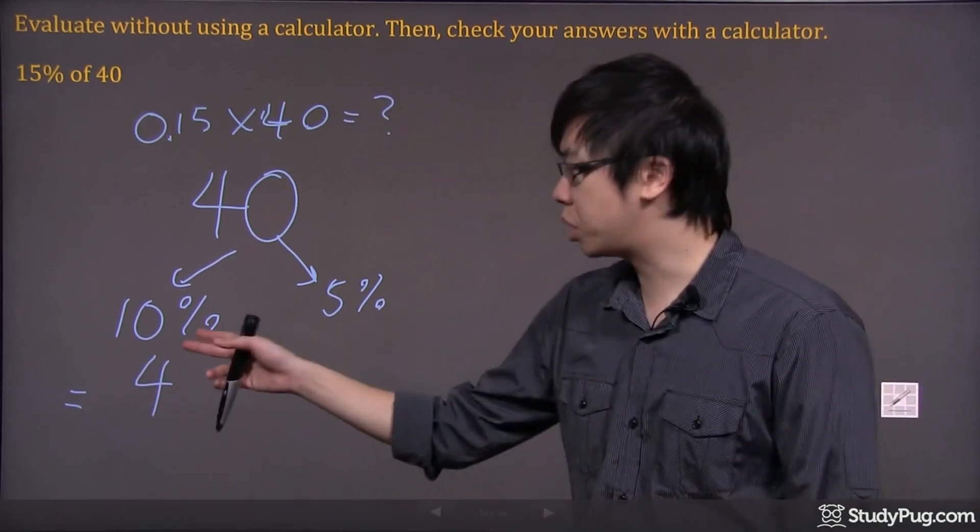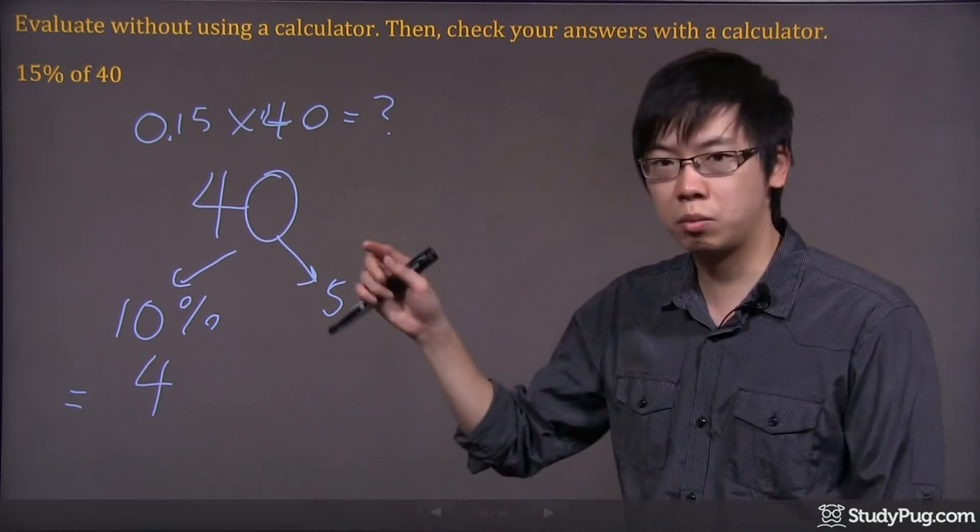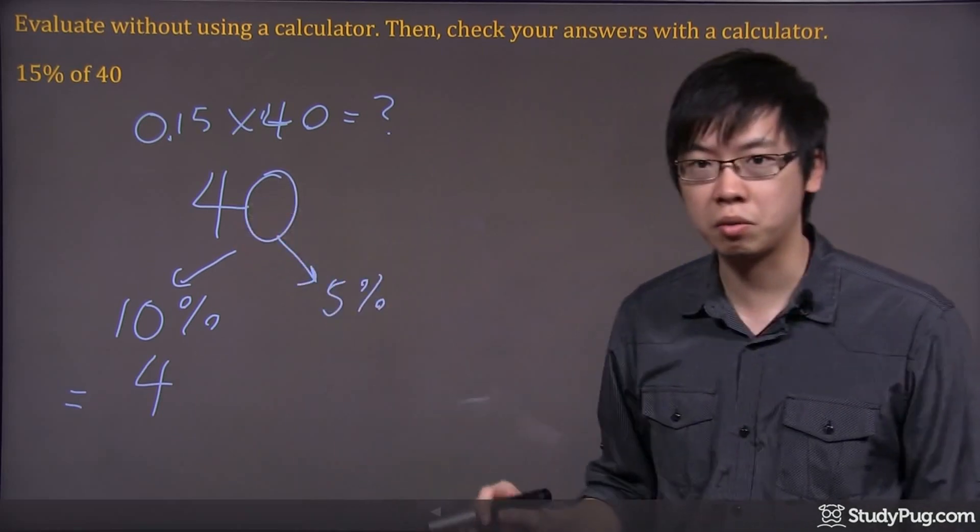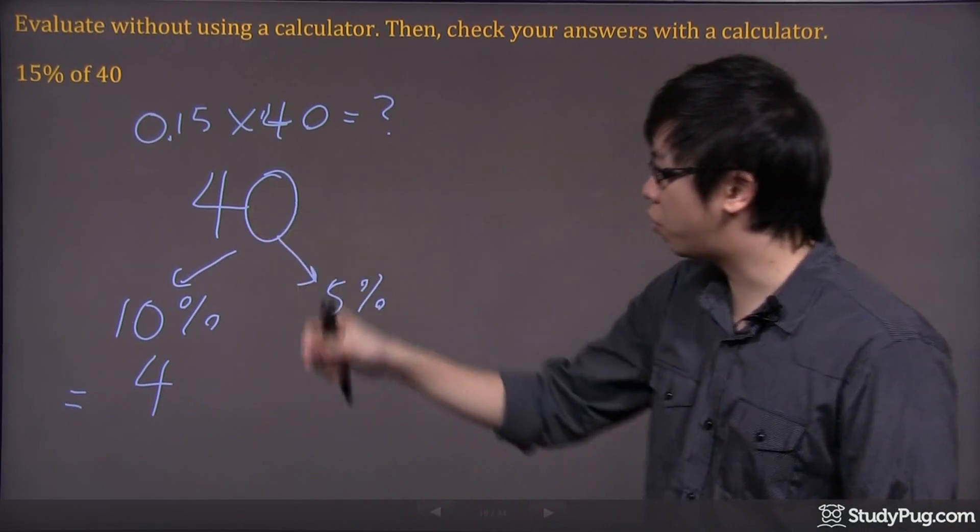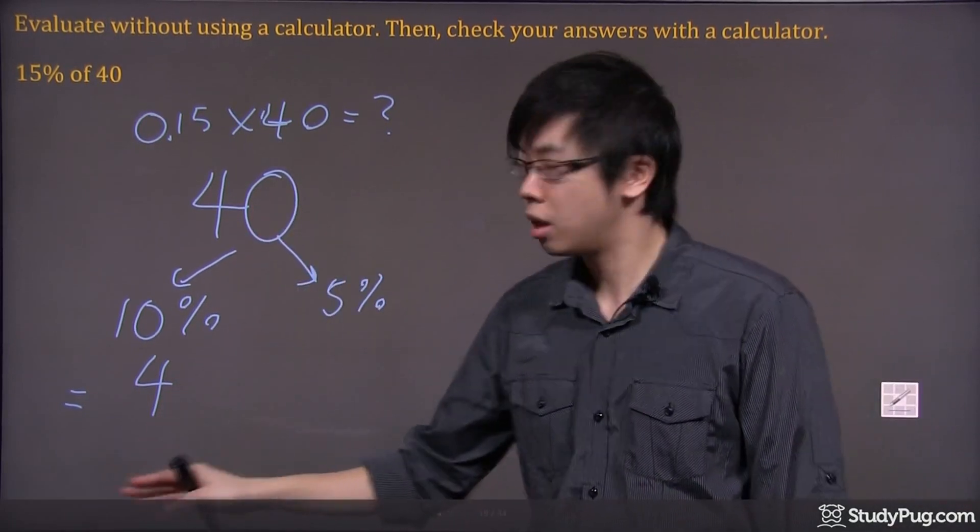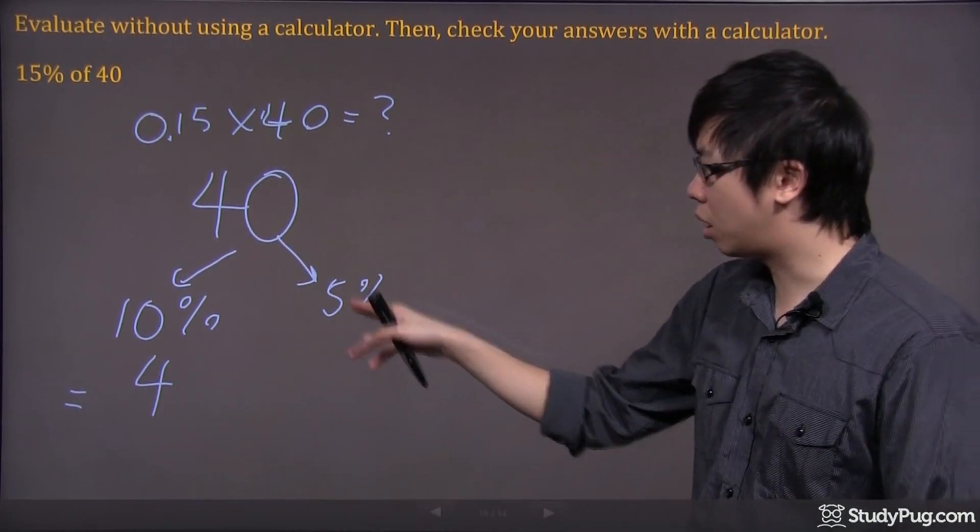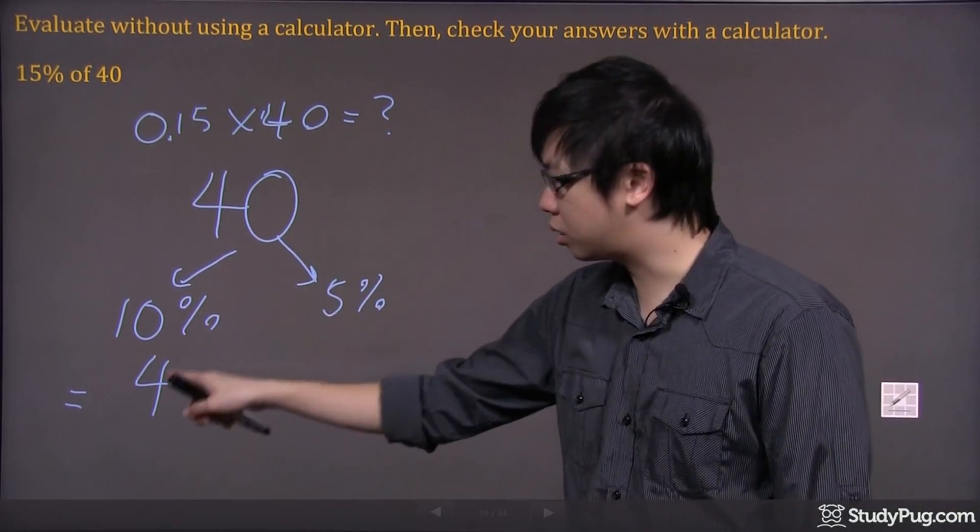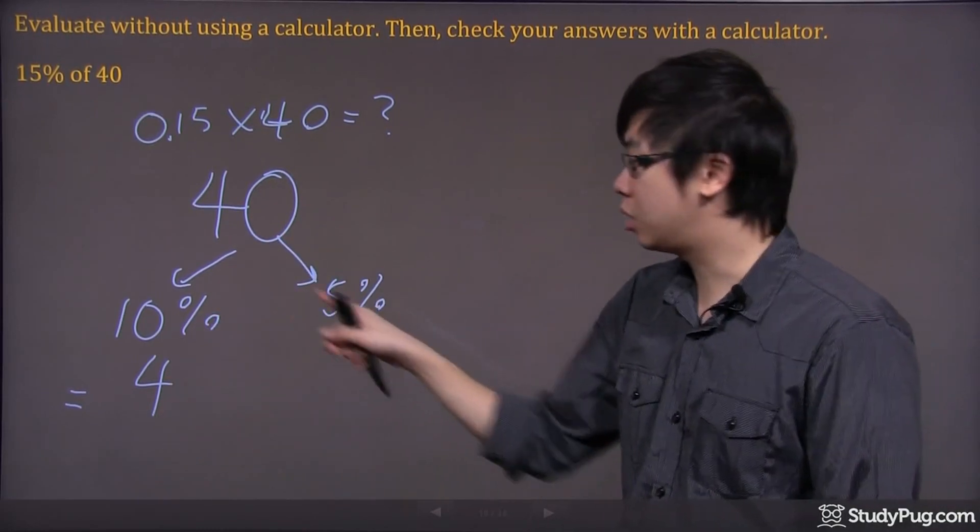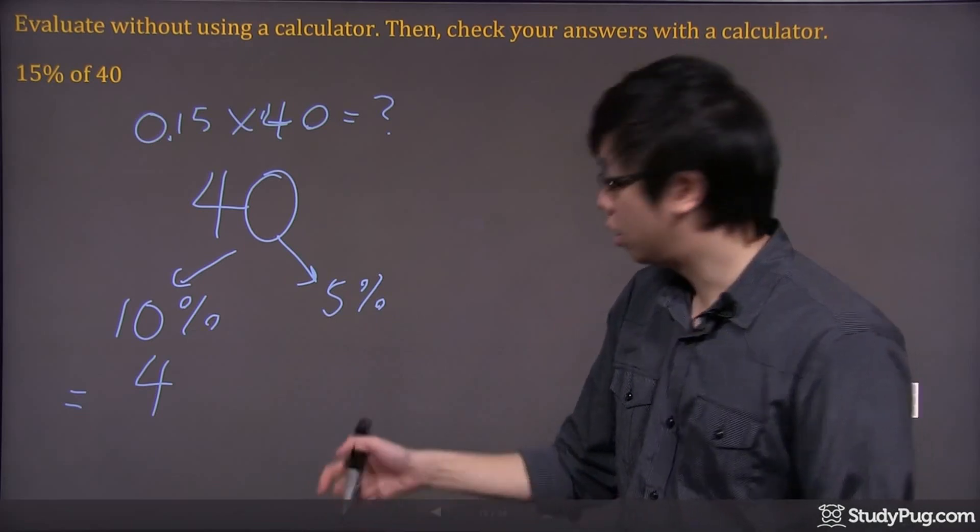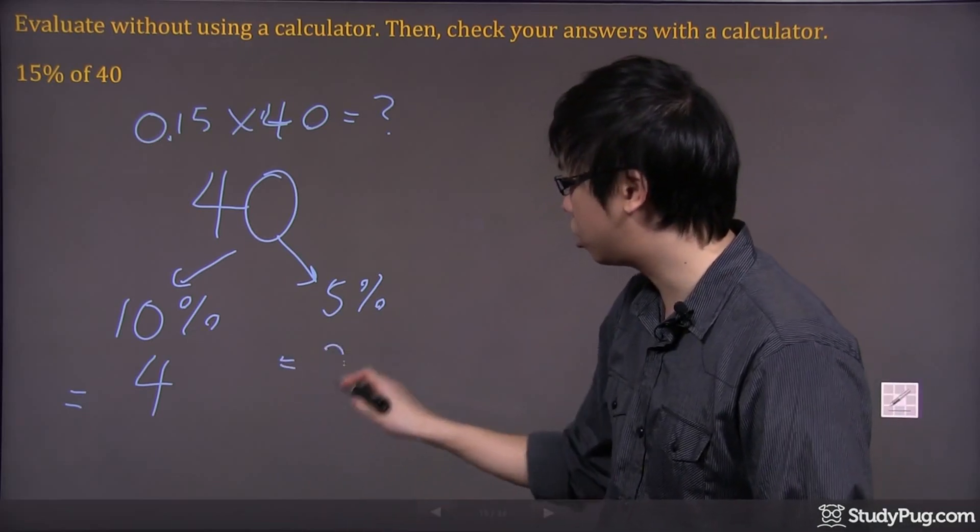The 10% of something is just one decimal to the left of that number. So 10% of 40 is just 4. Now what's 5% of 40? Well, if 10% is 4, then 5% is only half of 10%. So that makes it just 2.